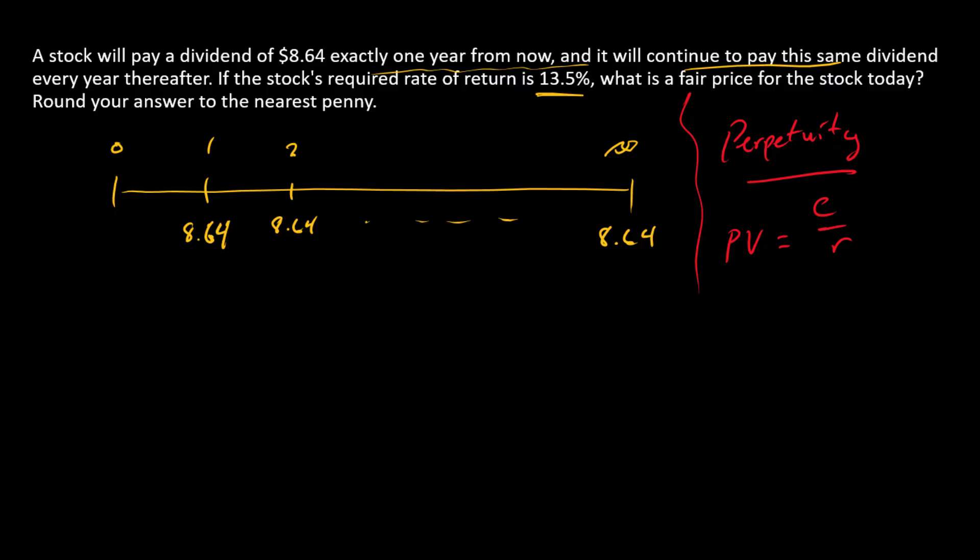And so here since we're solving for a price at time zero so it's one period away from the first payment everything should apply perfectly. The price at time zero should be the cash flow amount divided by the discount rate of 13.5%.